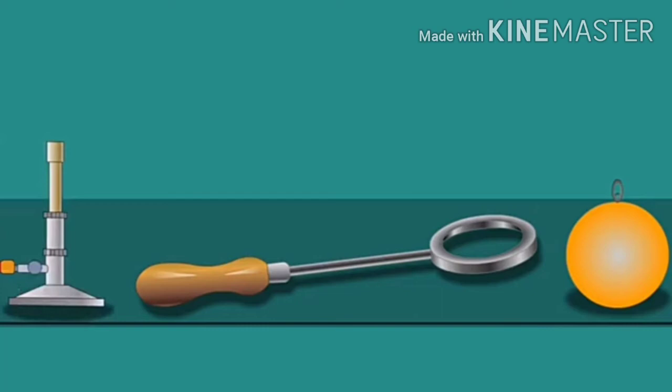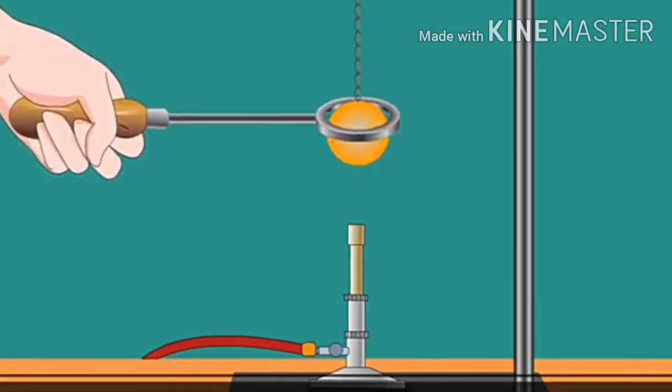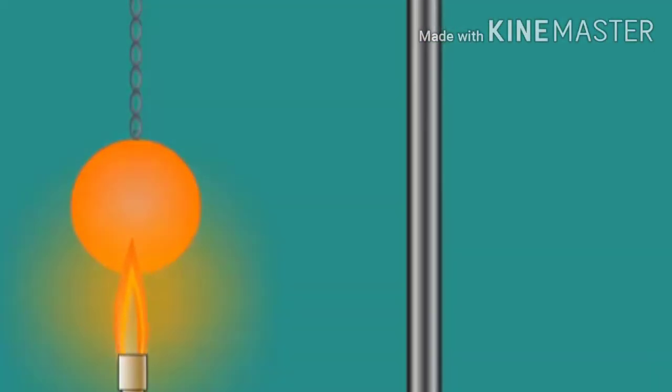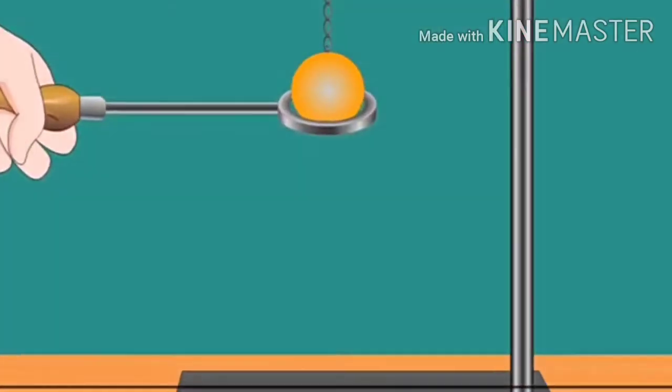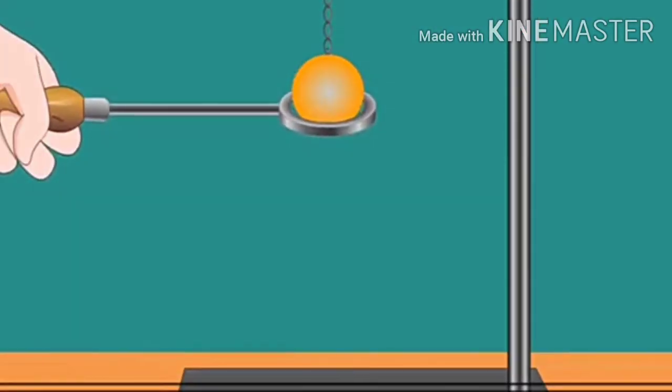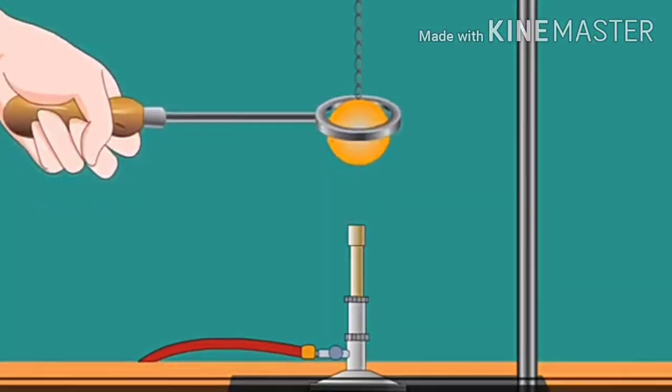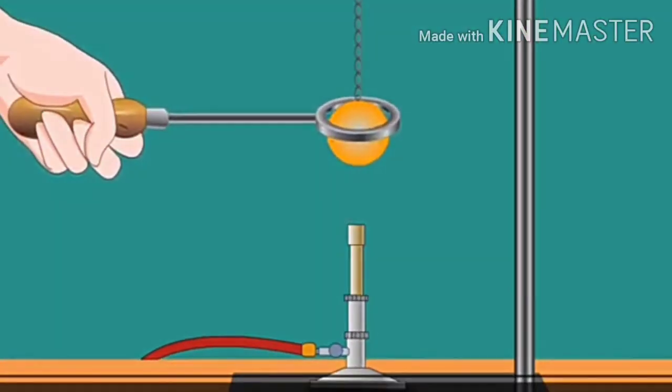Apparatus: A metal ring, a metal ball, a burner, etc. Activity: Take a metal ring and metal ball of such size that the ball just passes through the ring. Heat the ball and check whether it passes through the ring. Now let the ball cool down and check whether it passes through the ring. The above experiment tells us that metals expand on heating and contract on cooling.